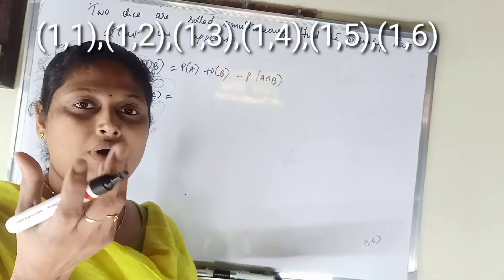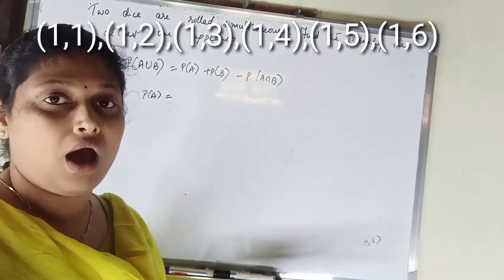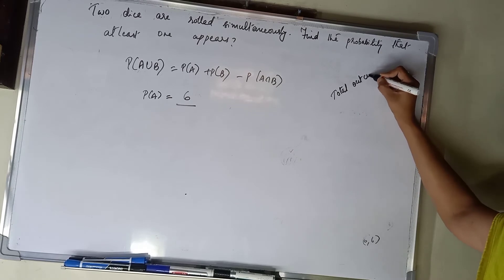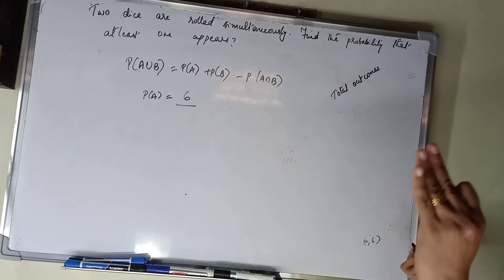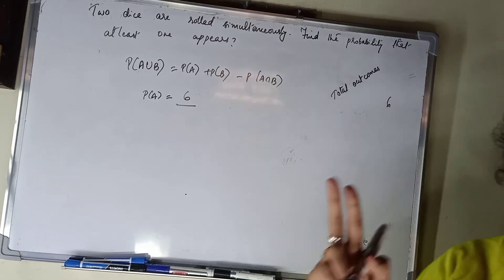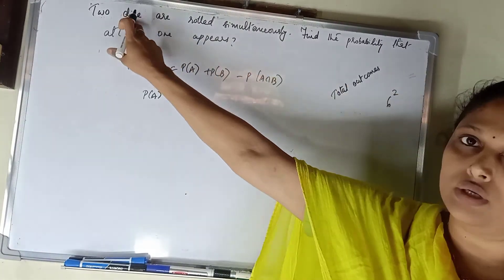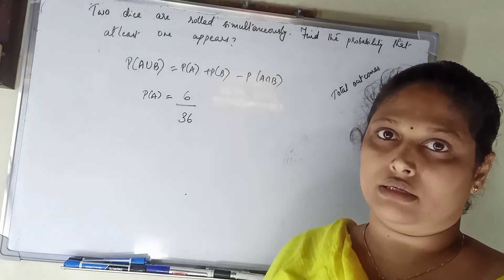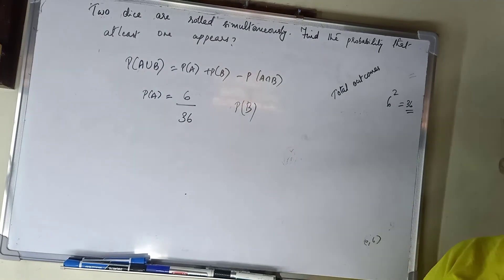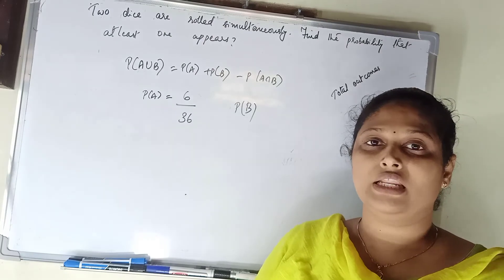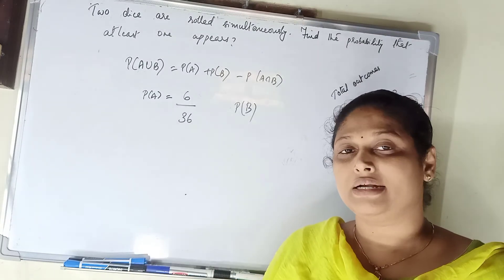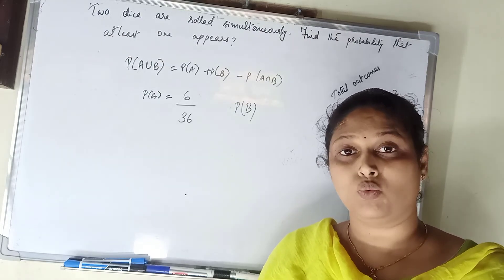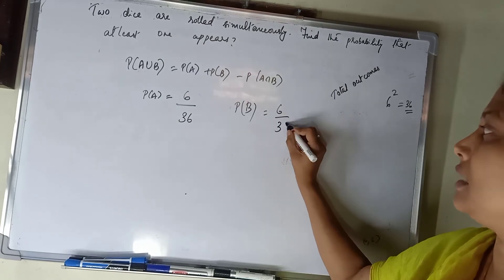The favorable outcomes where 1 appears on the first die are: (1,1), (1,2), (1,3), (1,4), (1,5), (1,6) — that is 6 outcomes, so P(A) = 6/36. Similarly for 1 on the second die: (2,1), (3,1), (4,1), (5,1), (6,1), and (1,1) — that is 6 outcomes, so P(B) = 6/36.